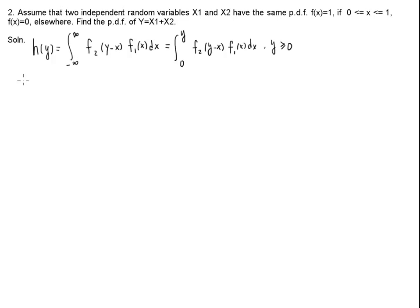Now let's look at the same problem, but with a different density function for x1 and x2. This density function is still piecewise: it equals 1 if x is within the interval [0,1], and 0 elsewhere. We can see that x1 and x2 are non-negative random variables because the density function is non-zero only when x is greater than or equal to 0.